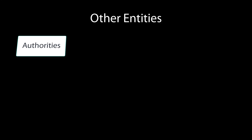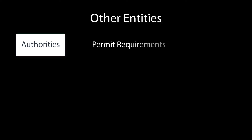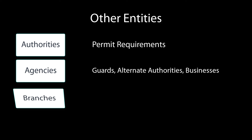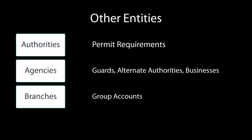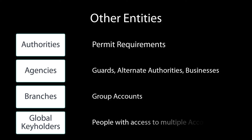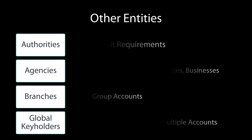Other data entities include authorities where they have requirements for permits configured; agencies that can be configured for guarding; alternate authorities; businesses like cleaners; branches that can be used to group accounts much like dealers but without action patterns and programming; and global key holders for people who have access to multiple customer sites but have the same contact information.